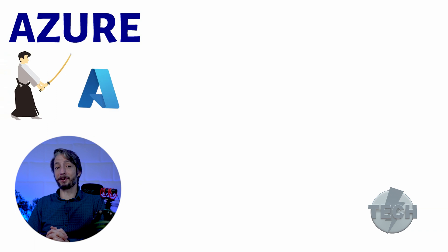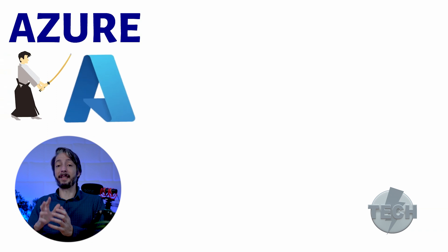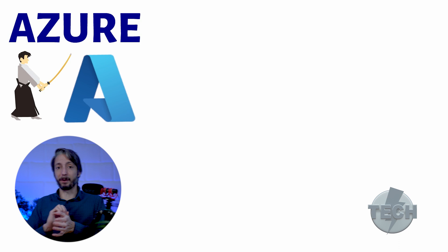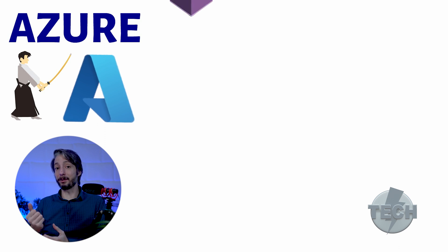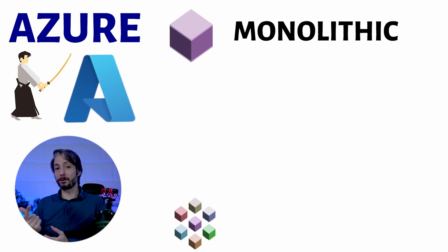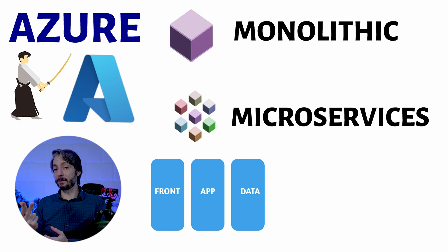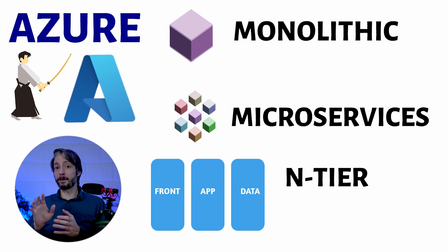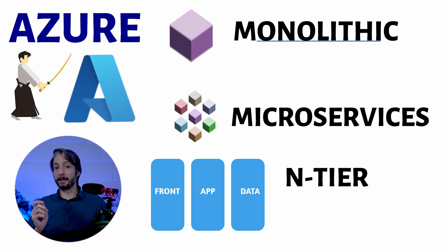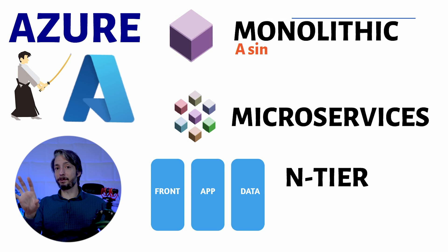As a master Azure architect in the infrastructure field, you may not be so well-versed with the application part. There are three fundamental terms which should be discussed in any application migration: monolithic, microservices, and N-tier architecture. Knowing how the application has been built is vital to the services that you will use and decide in Azure. A monolithic application is built as a single unified unit.